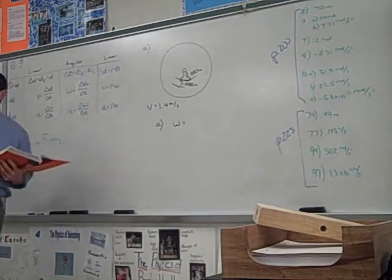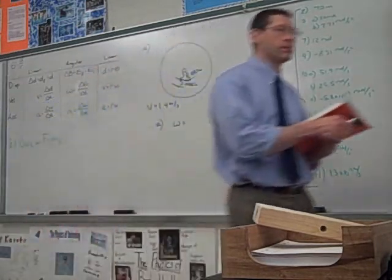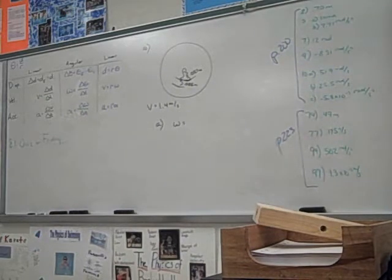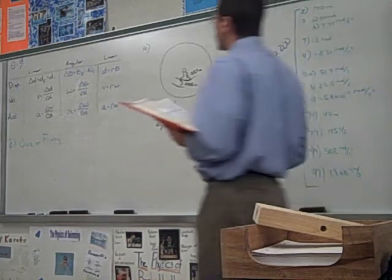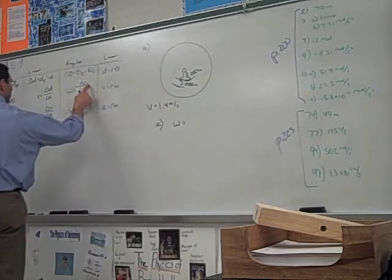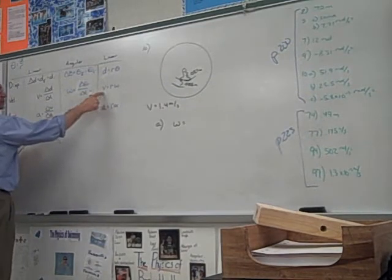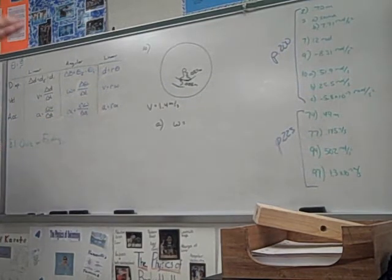Okay, now we have two ways to find omega. We could either do delta theta over T, or we could do V over R, right? Either way. V over R.